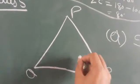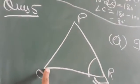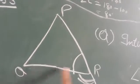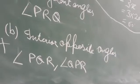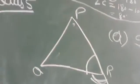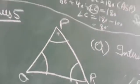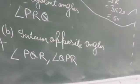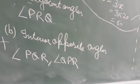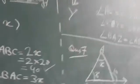QRX का interior adjacent angle होगा PRQ (जिसे QPR भी कह सकते हैं - दोनों एक ही बात है)। Second part: interior opposite angles होंगे यह दोनों - एक P side, एक Q side। तो इसका answer होगा angle PQR और angle QPR।